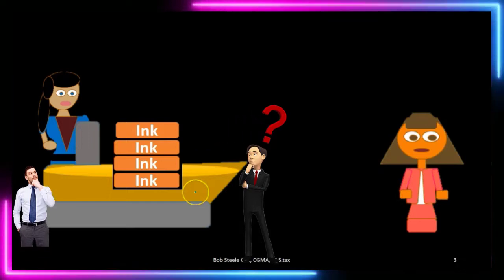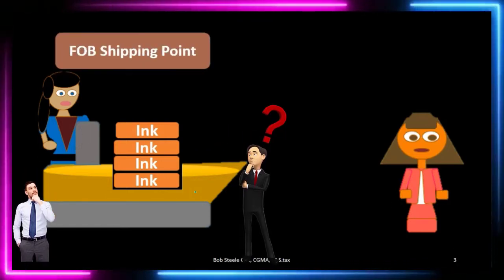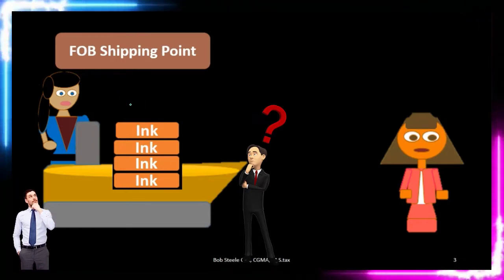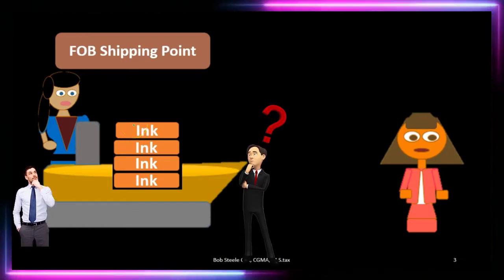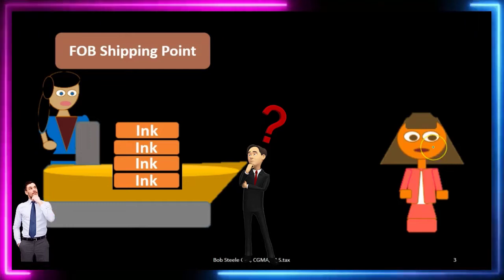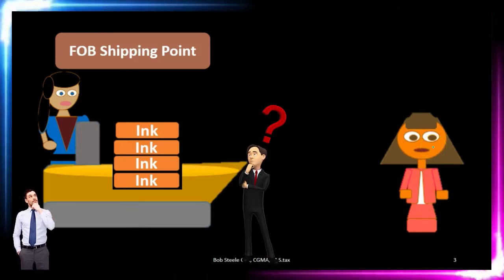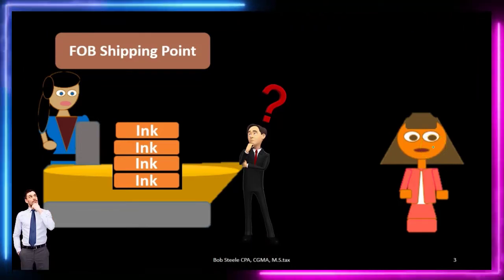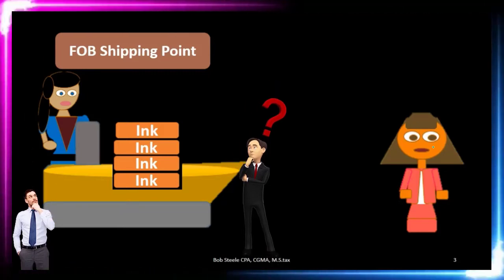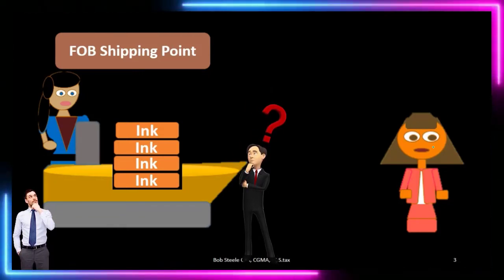If it changes hands at the time that it goes on the boat, we're going to call that FOB shipping point. Meaning at the shipping point, it is now the new company's responsibility — they own that ink now and will probably be paying for the shipping. And if pirates take the ship on the way over, it's going to be the responsibility of the new owner.